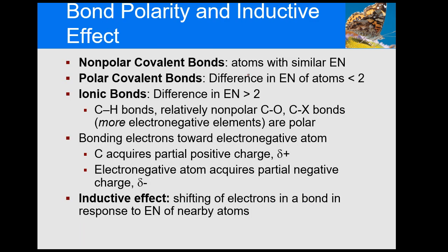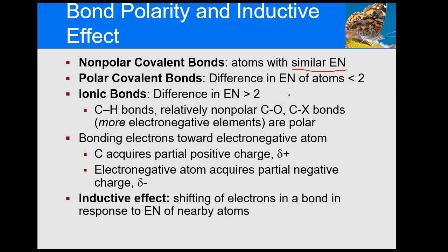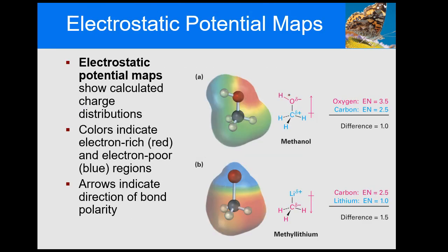This slide is a summary of what I just said. Nonpolar is where the electronegativities are the same. Polar covalent involves a difference in electronegativities — if the difference is less than two it's polar covalent, greater than two is ionic. I'm not going to give you the specific values; I just want you to understand that as atoms get closer to fluorine, they are more electronegative.